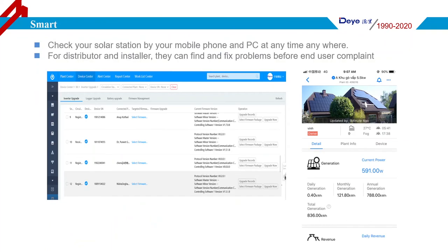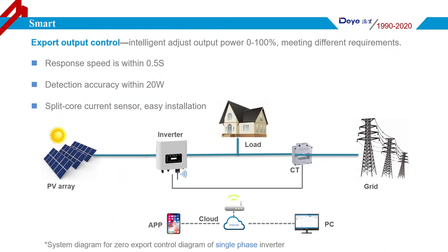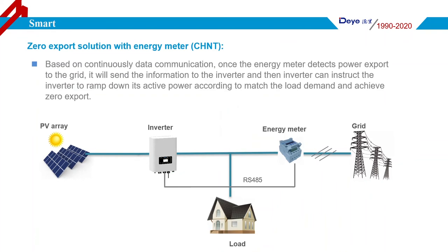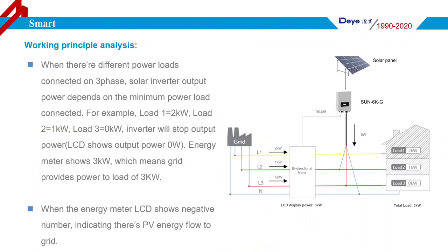All Doye string inverters have an output power control function, allowing you to control output power from 0 to 100% to meet different regional requirements. In many countries where feeding solar energy into the utility grid is restricted, users need to ensure all solar energy is consumed by the local load. For these models with an RS485 interface, the export limit function is easy to implement by installing a CT or energy meter.